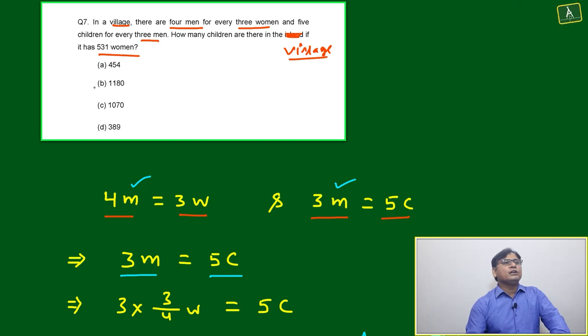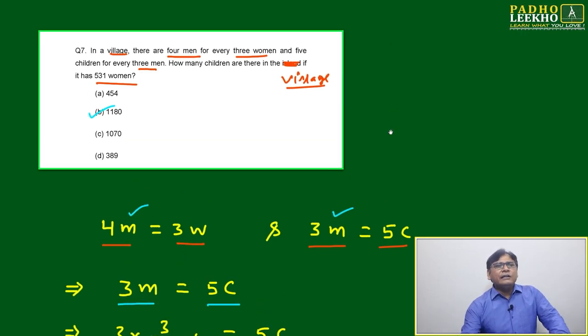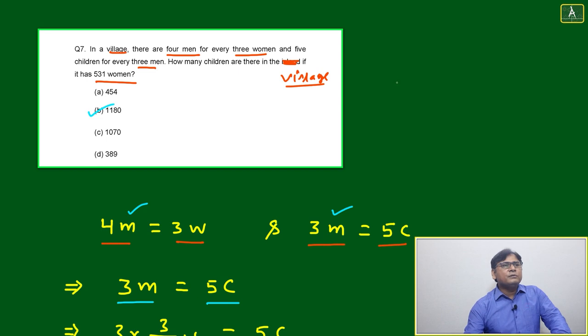Very simple. Or if you want to solve in another way you will be able to solve like here, what is common? Men is common. Then we can take women by men.